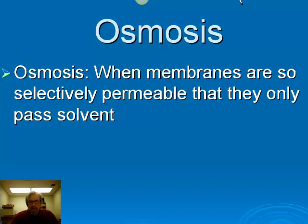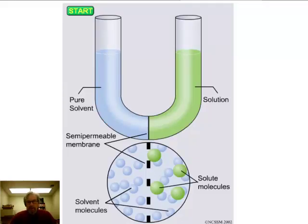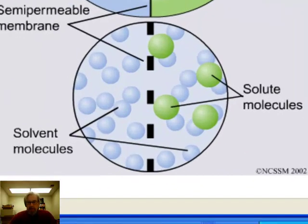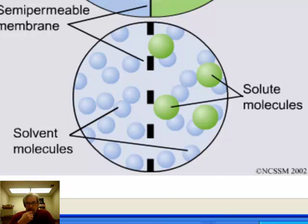Let's watch a simulation to see how this happens on the submicroscopic scale. In this simulation, green represents a solution made with pure solvent and some solute molecules, and blue represents the pure solvent — so blue might be water and green might be salt solution. There's a semi-permeable membrane at the bottom of this U-shaped tube. On one side are only solvent particles; the other side has both solvent and solute molecules. The solute molecules are too large to fit through the membrane, but the solvent molecules can pass through.